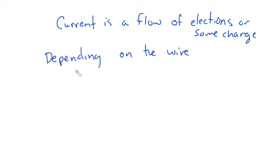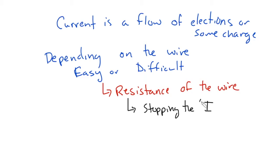So back to what we were saying in the previous lesson, current is a flow of electrons or some charge. I say electrons because that's most commonly what we're going to use in this course. So we have this flow of electrons. Now, depending on the wire or depending on the conductor that's flowing through, this could be easy or difficult for the electrons to do. And the thing that makes this easy or difficult is the resistance of the wire, which pretty much means stopping the flow, stopping the current. If you want to resist something, you stop it from happening.